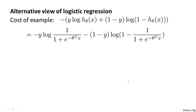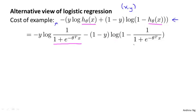If you look at the cost function of logistic regression, each example x comma y contributes a term to the overall cost function. For the overall cost function, we would also have a sum over all training examples and a 1 over m term. But this expression is the term that a single training example contributes to the overall objective function for logistic regression. If I take the definition of the hypothesis and plug it in, each training example contributes that term to the overall cost function.